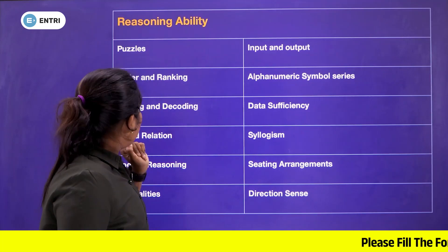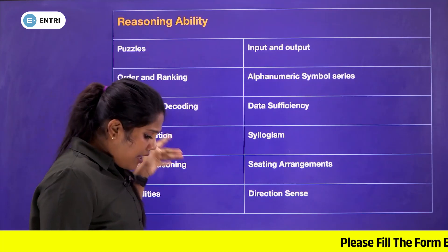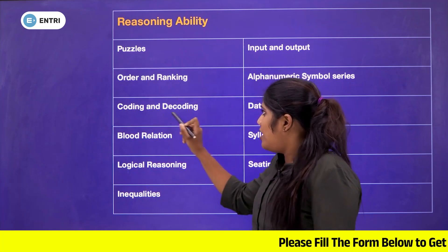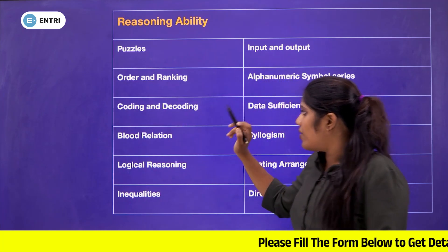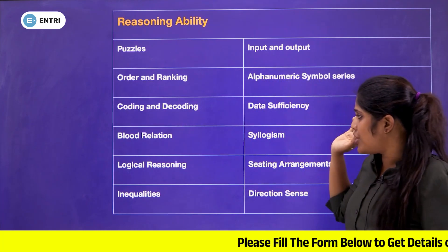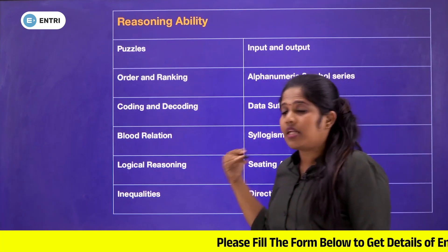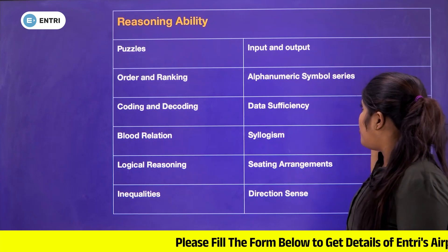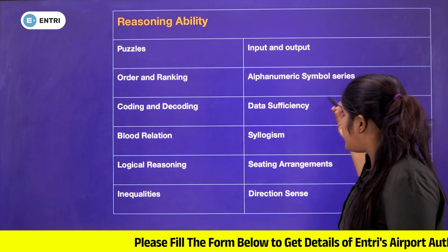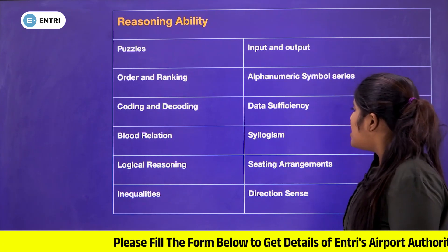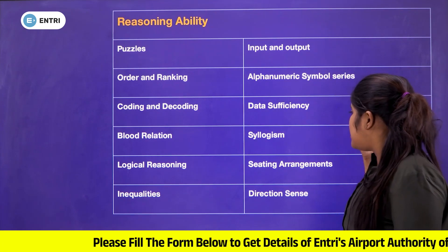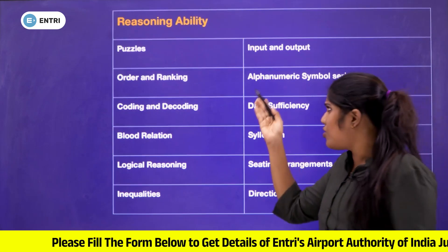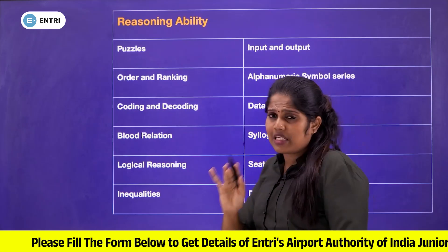Coming to reasoning ability: topics include puzzles, order and ranking, coding and decoding, blood relation, logical reasoning, inequalities, input and output, alphanumeric symbol series, data sufficiency, syllogism, seating arrangement, and direction sense. Normally, reasoning ability is straightforward.